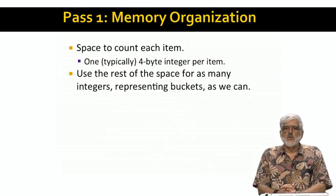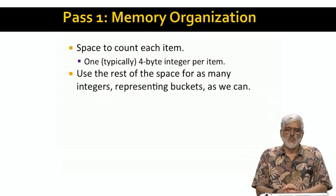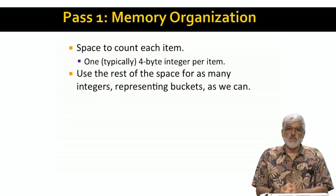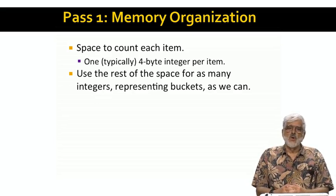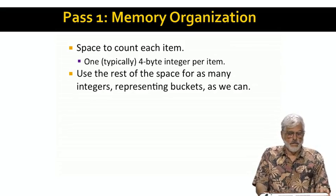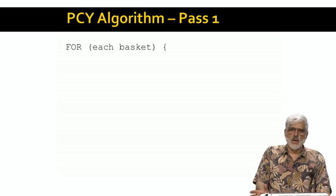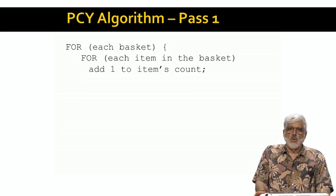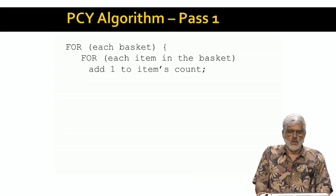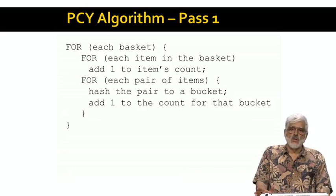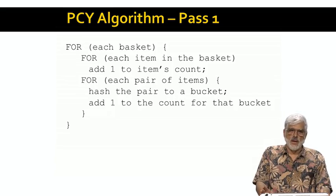On pass one, we use what space we need to count the occurrences of each item, just as A Priori does. Typically, four bytes per item will do nicely. But the difference is that whatever space we do not need for counting items is given over to as large a hash table as we can, where each bucket is a count — typically a four-byte integer as well. Here's the pseudocode for the first pass of the PCY algorithm. We read each basket once, as we would on any pass of any algorithm. We look at each item in the basket and add one to its count — that is just what A Priori does. The additional work on the first pass of PCY is that we look at each pair of items, hash the pair to some bucket, and increment the count for that bucket.